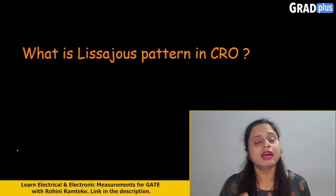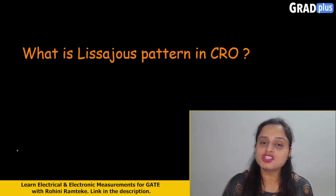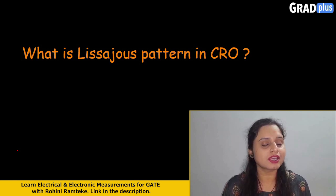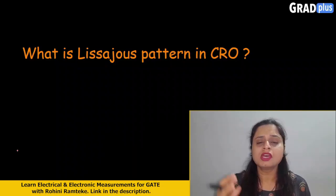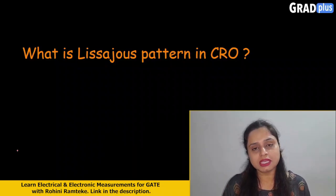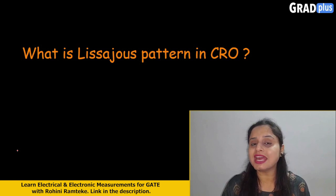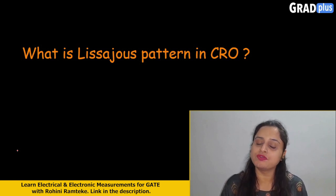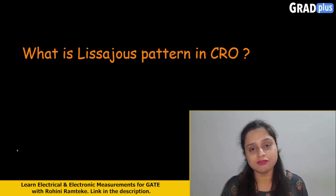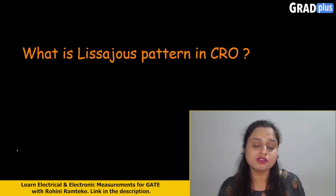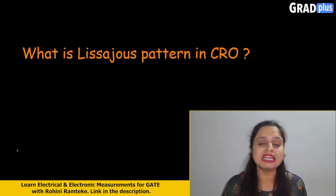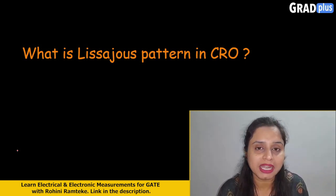Hello everyone. Let us find out what is the Lissajous pattern in the CRO, that is the cathode ray oscilloscope. The cathode ray oscilloscope is basically used to measure and analyze different types of waveforms — sine wave, triangular wave, square wave, or any waves. In the CRO, one important term is the Lissajous pattern.